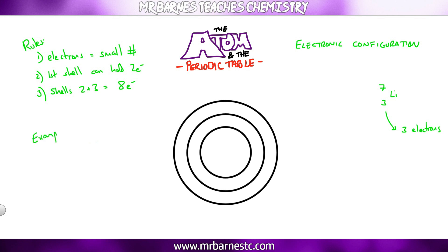Let's have a look at an example using lithium. Two electrons can go in the first shell — that's rule two. Lithium has three electrons, so I put two in the first shell. Of my three I've used two, so I've got one electron left. My second shell can hold eight, but I've only got one, so I put one electron in. That's the electronic configuration — if I wanted to write it, it would be 2.1.